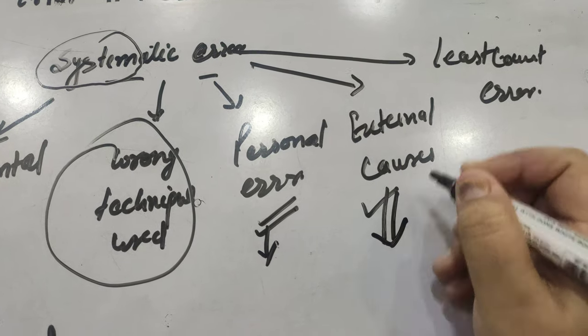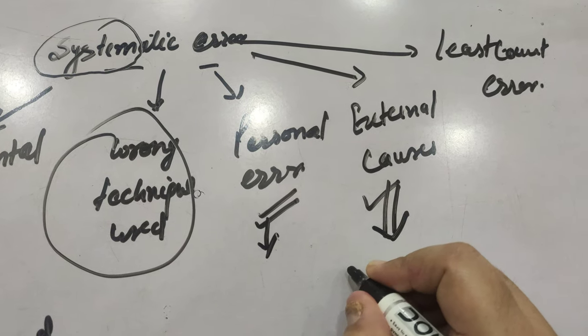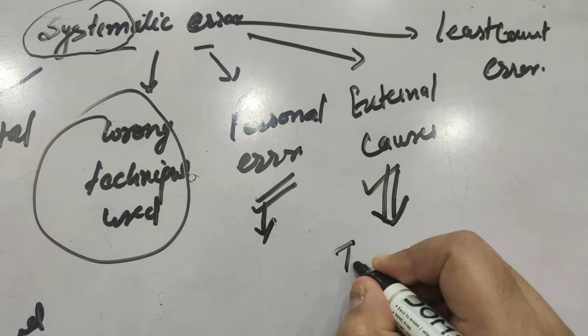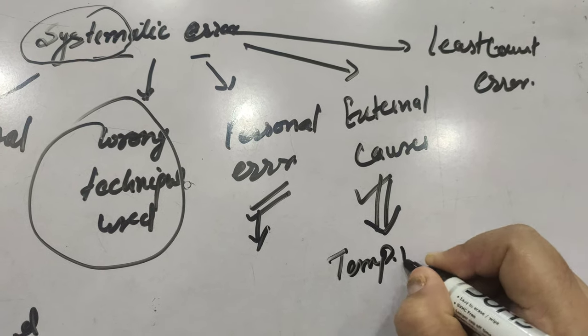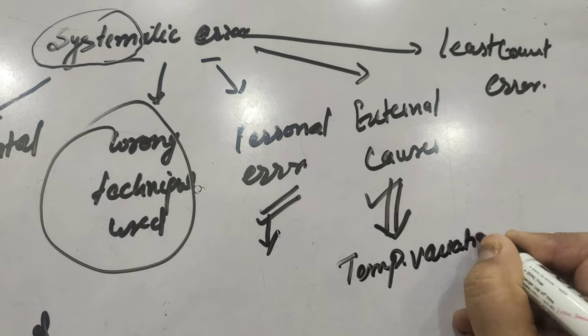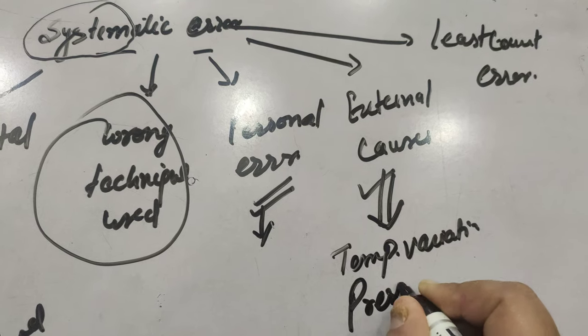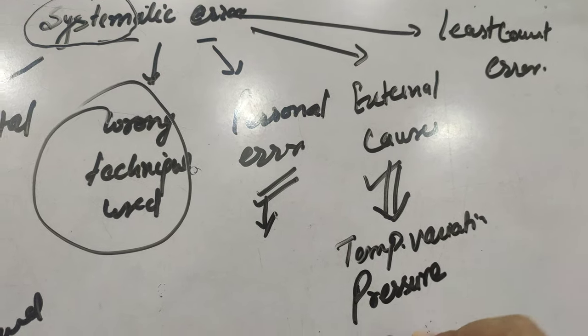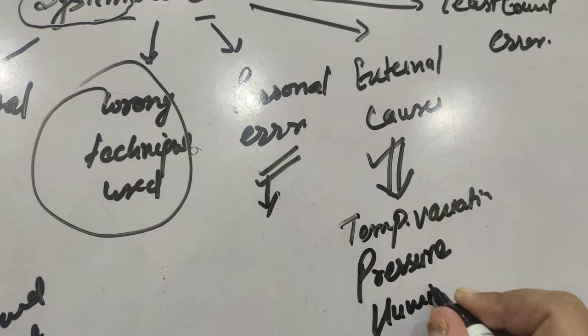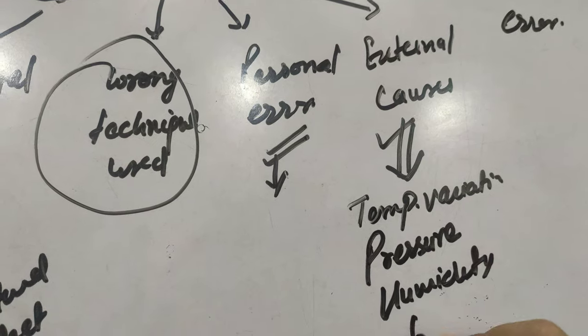External causes means here we are talking about the environmental conditions like temperature variations, pressure variation, humidity or wind velocity, etc.